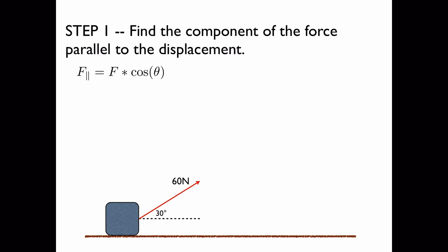That's because the displacement, which is in the horizontal direction, is adjacent to the angle 30 degrees, so we use cosine. We plug in the numbers from the diagram below and we get our result.